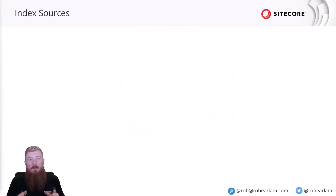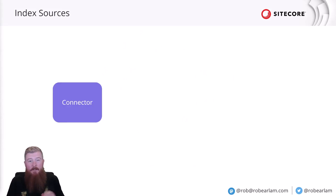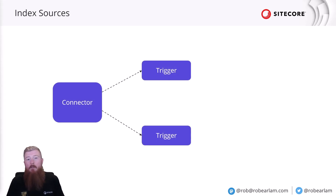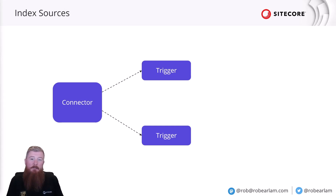When you're configuring your index sources, there's three main elements you're going to be working with. The first is the connector, and this will define the way you're going to get your data from the source. The connector will then have one or more triggers, and these define where in the target source you're going to point your connector.